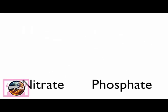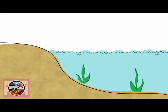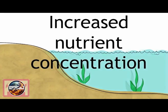Eutrophication starts when fertilizers, which are rich in nutrients like nitrate and phosphate, are washed into the river or lake system. This leads to an increase in nutrient concentrations in the water.